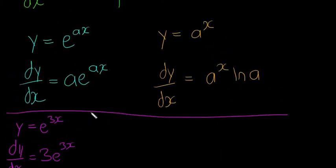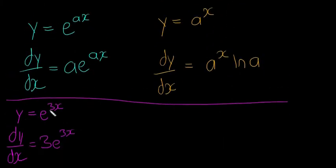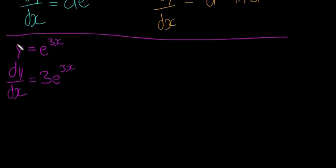We had y is equal to e to the 3x, and that means you bring the 3 down. So when you differentiate it, dy/dx is equal to 3e to the 3x. Has everyone seen that example in action? We're going to have one more example of this rule.